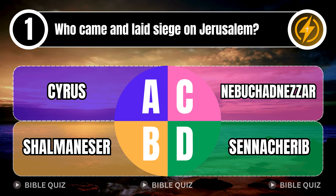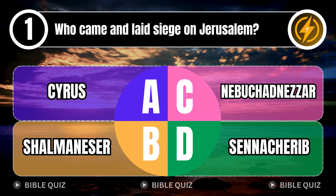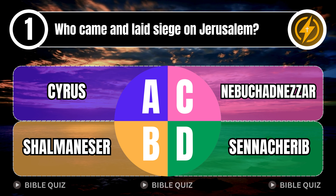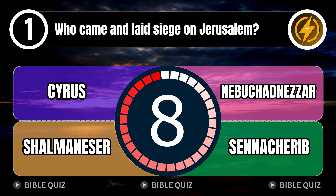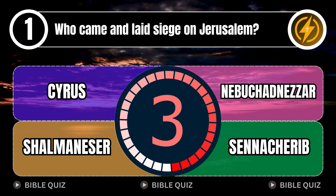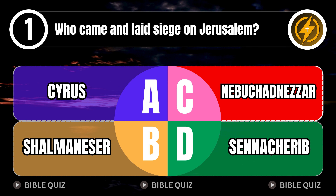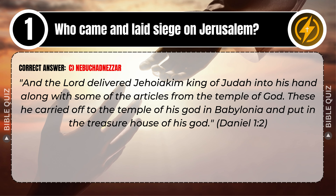Question 1: Who came and laid siege on Jerusalem? A. Cyrus. B. Shalmaneser. C. Nebuchadnezzar. D. Sennacherib. Correct answer: C. Nebuchadnezzar. Explaining the Bible — the Lord delivered Jehoiakim king of Judah into his hand, along with some of the articles from the temple of God. These he carried off to the temple of his God in Babylonia and put in the treasure house of his God. Daniel 1 verse 2.